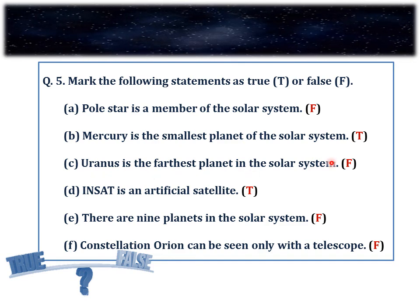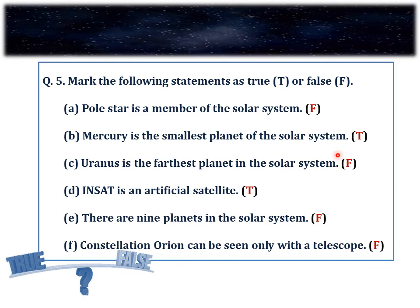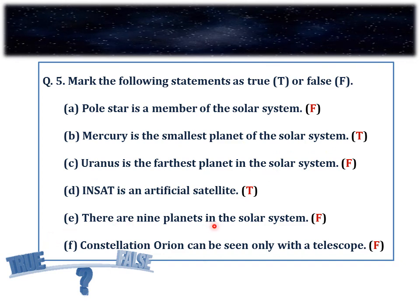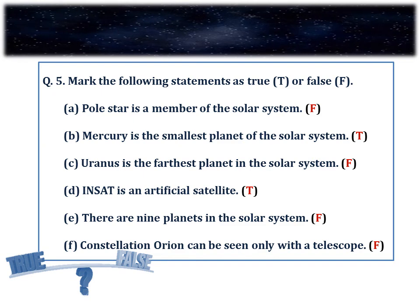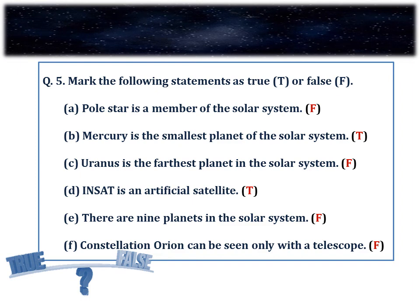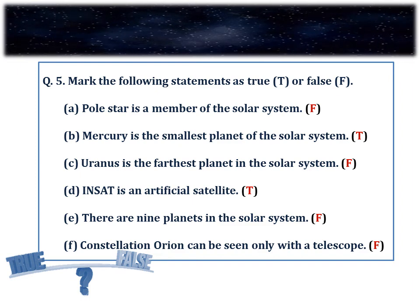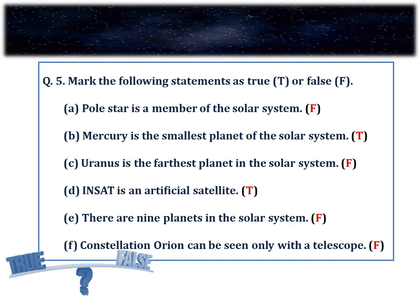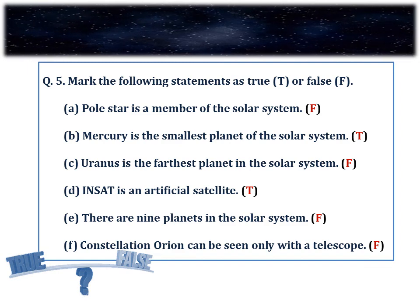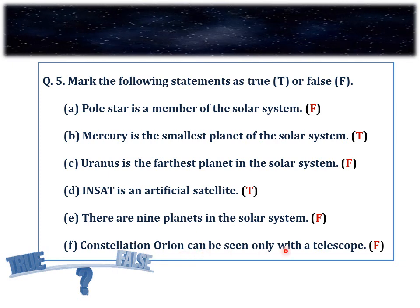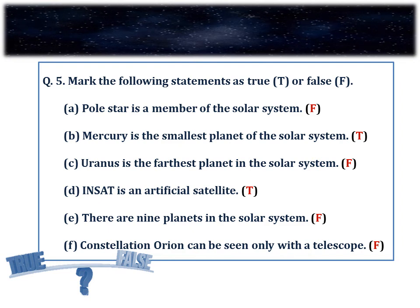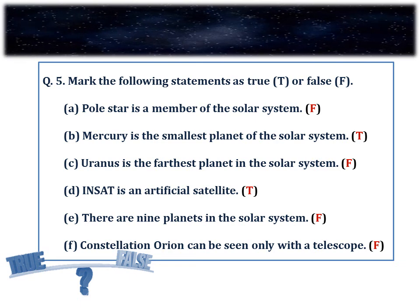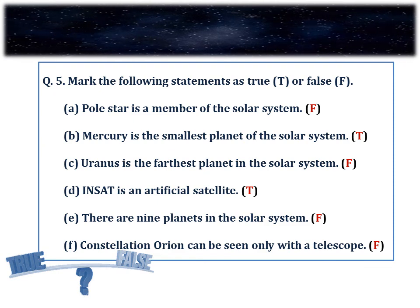C. Uranus is the farthest planet of the solar system — False. Neptune is the farthest planet of the solar system. D. InSat is an artificial satellite — True. E. There are 9 planets in the solar system — False. We have only 8 planets. Till 2006 there were 9 planets and Pluto was the farthest, but in 2006 the IAU adopted a new definition of a planet and Pluto does not fit the definition. F. Constellation Orion can only be seen with the help of a telescope — False. Orion is one of the most magnificent constellations visible with the naked eye and can be seen during winter in the late evenings.